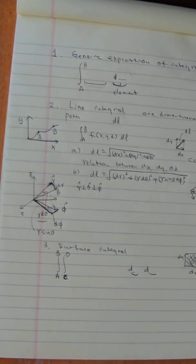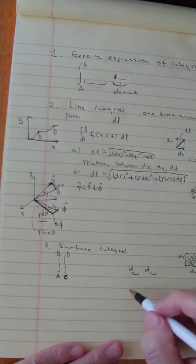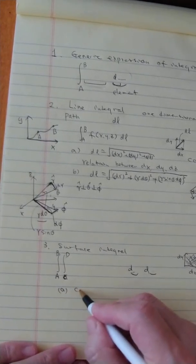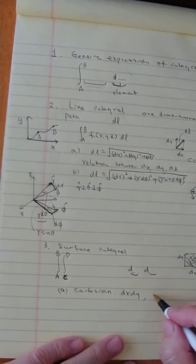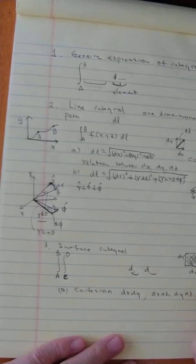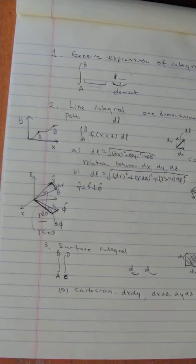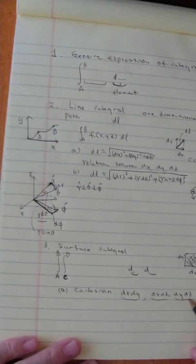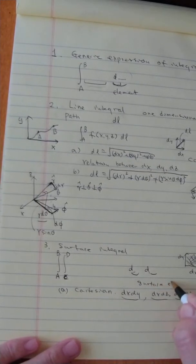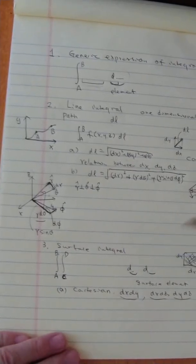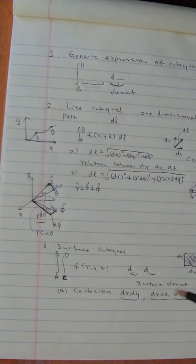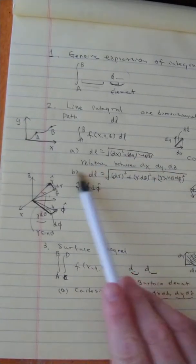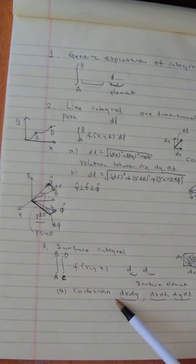You could have dy·dz, or other combinations. For Cartesian coordinates, you have three possible surface elements: dx·dy, dx·dz, or dy·dz — no other cases. Surface integrals are actually simpler than line integrals in this sense: if you choose Cartesian coordinates and integrate over dx·dy or whichever combination, there's no need to find a relation between variables — you integrate directly.